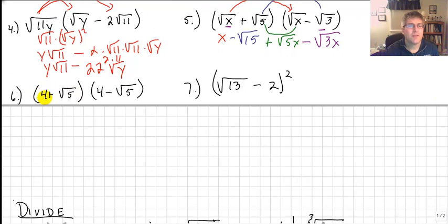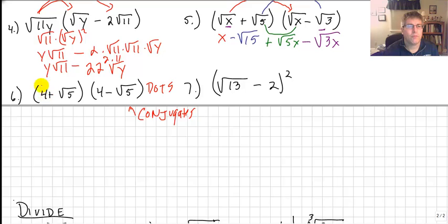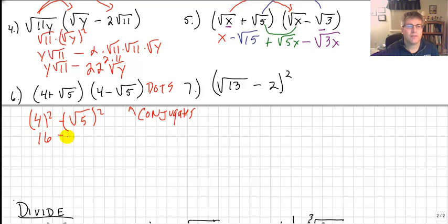Sample problem 6: 4 plus radical 5 times 4 minus radical 5. This is our difference of two squares pattern — also called conjugates, so get used to me referring to these as conjugates. We have the same terms with opposite signs: A plus B times A minus B. This follows the pattern 4 squared minus radical 5 squared, which is 16 minus 5, which equals 11.